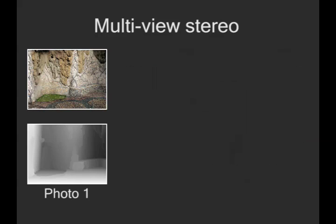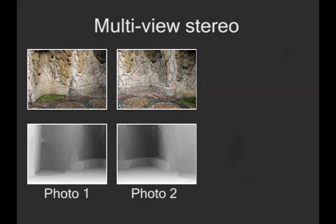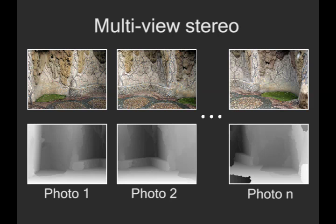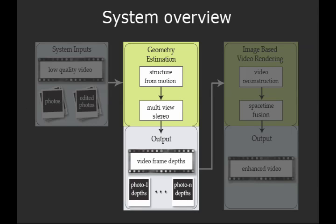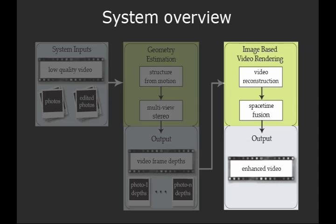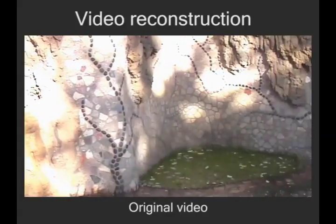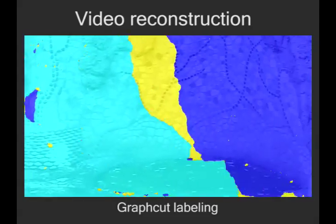Depths are also computed for each of the still photographs. In the next step of our system for rendering image-based video, we use the depths estimated in the previous phase to warp the photographs into the viewpoints of the video frames. The input video is reconstructed from patches of the warped photographs using a graph cut algorithm.